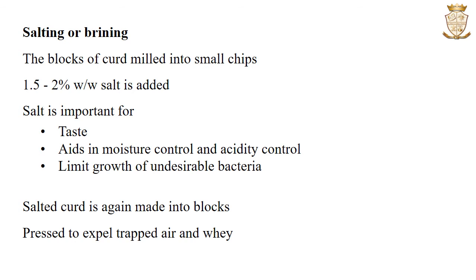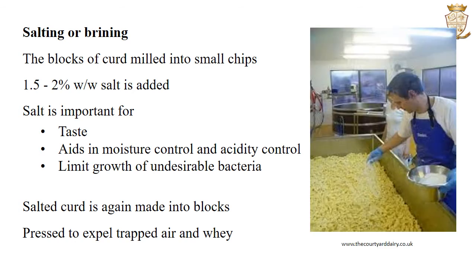The next stage is salting or brining. The blocks of curd are milled into small chips and 1.5 to 2% weight by weight of salt is added. Other ingredients such as colouring agents, herbs or microbial inoculum for ripening may also be added during this step. Salt is important for taste and also aids in moisture and acidity control of cheese, and it helps to limit the growth of undesirable proteolytic bacteria. The salted curd is again made into blocks, pressed to expel trapped air and whey, and moulded into required shapes.